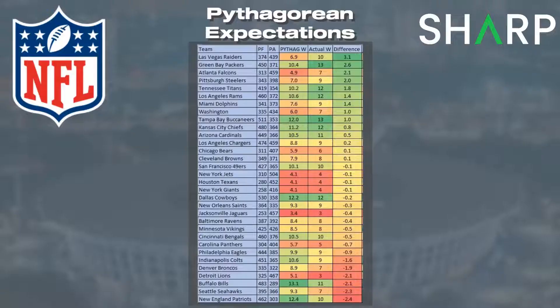If you look at any team from last season and apply this formula, you'll be able to see exactly who outperformed or underperformed just based on their points for and points against. I did all the calculations for each team during the 2021 regular season only and compared that to their actual win totals from last year. Here's a chart of each team sorted by the differential between their Pythagorean win percentage and what they actually won. A positive difference means teams that actually won more games than they were expected to, going all the way down to the team that won fewer games than expected.